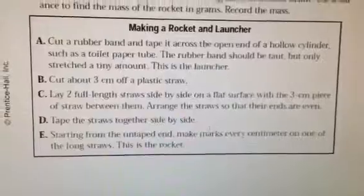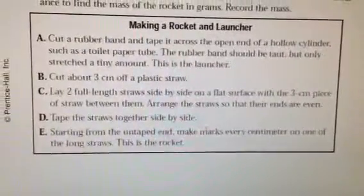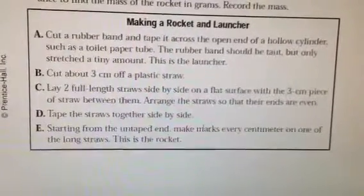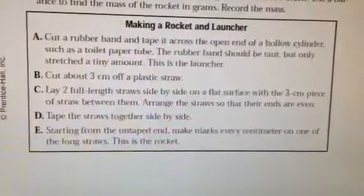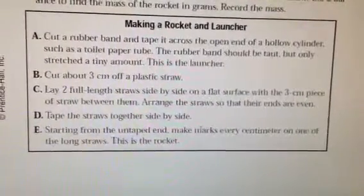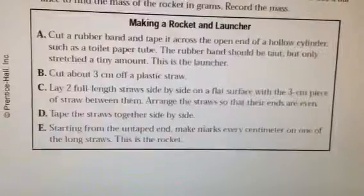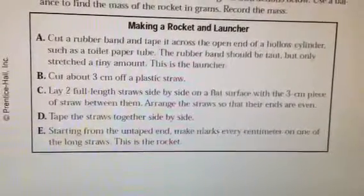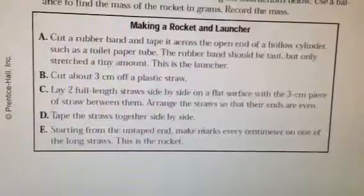This has the more detailed directions. Cut a rubber band and tape it across the open end of a hollow cylinder such as a toilet paper tube. We have used paper towel tubes too. The rubber band should be taut but only stretched a tiny amount. This is the launcher.